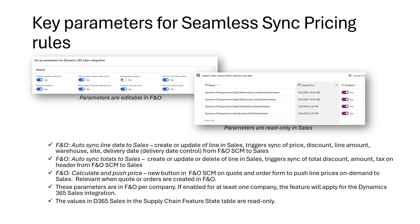When it comes to these parameters, be aware that they are legal entity or company specific in F&O, while in Sales they are not. So if you have multiple F&O companies, ensure that these parameters are aligned to avoid unexpected behavior.